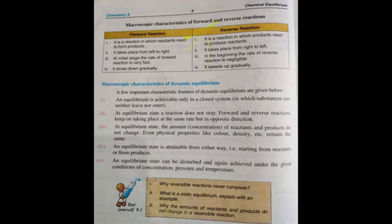The fifth and last property: in a closed system where dynamic equilibrium is established, if we disturb the system by changing the temperature or pressure, the dynamic equilibrium is disturbed for some time. But if we again provide the appropriate temperature, pressure, or conditions necessary for the reaction, the equilibrium will be re-established.